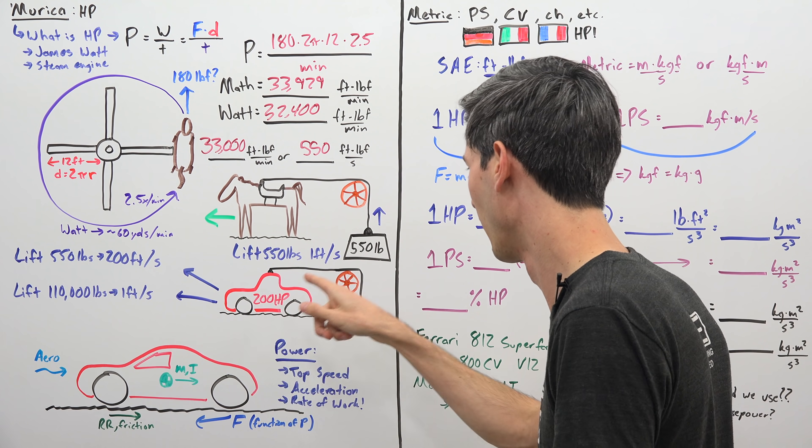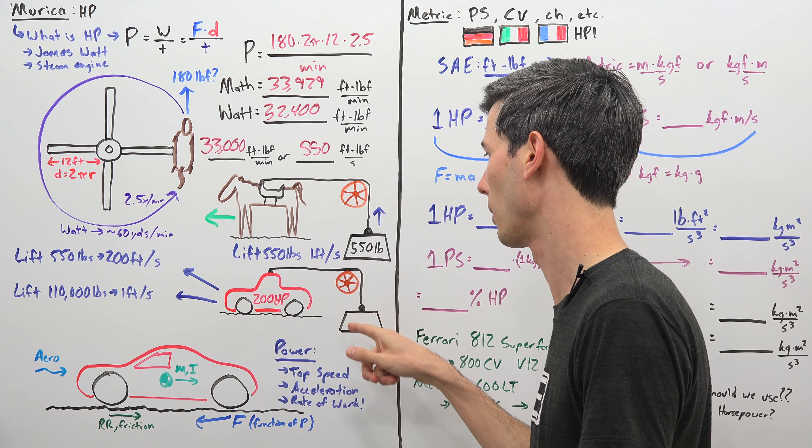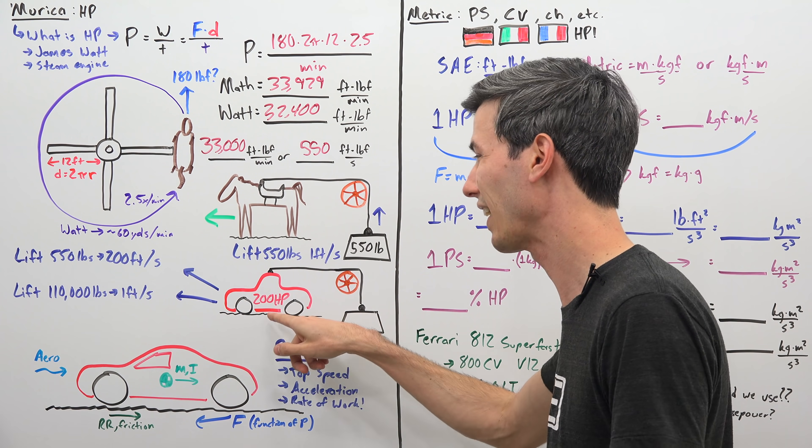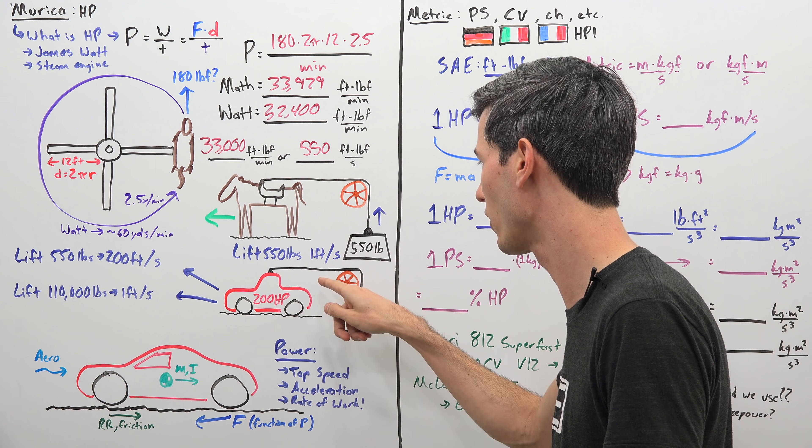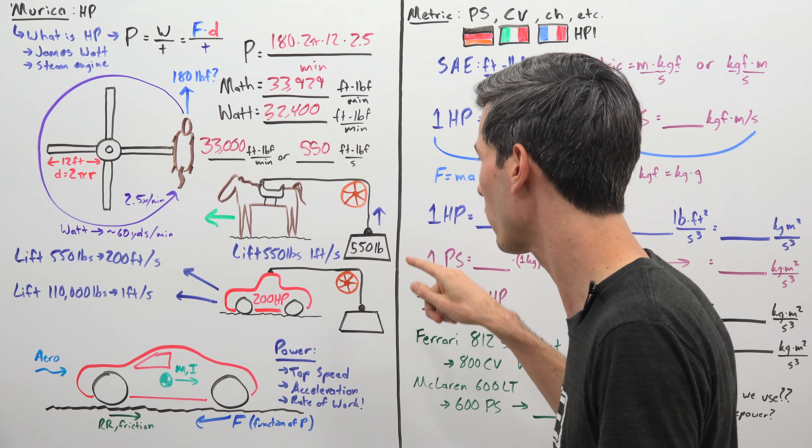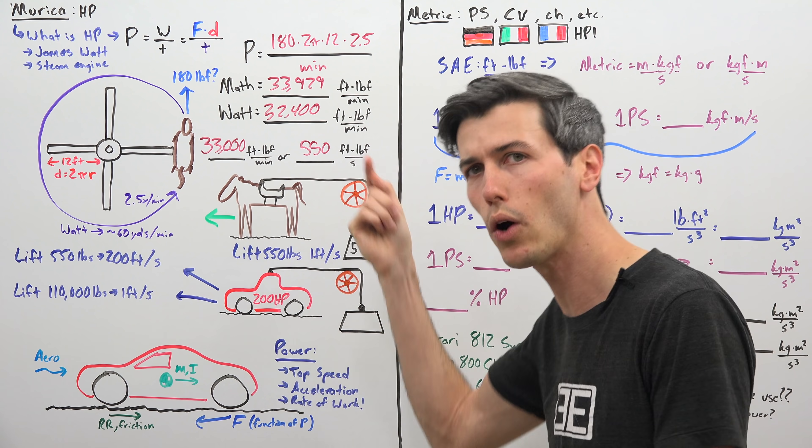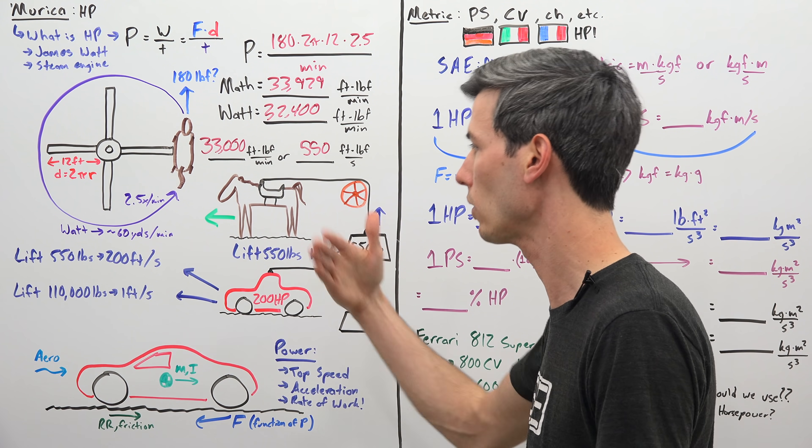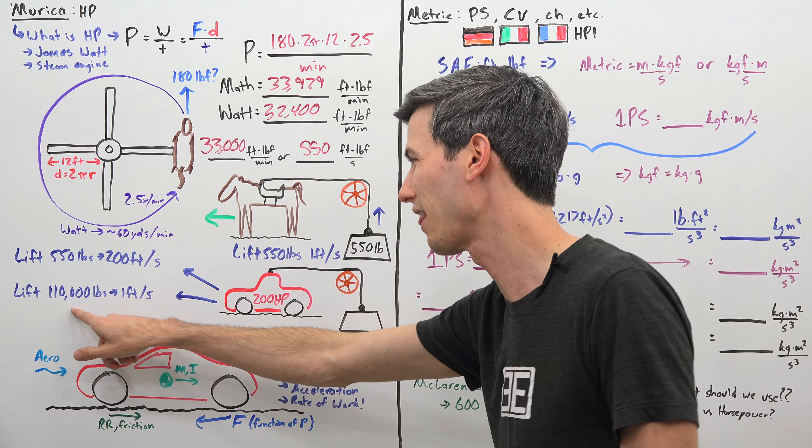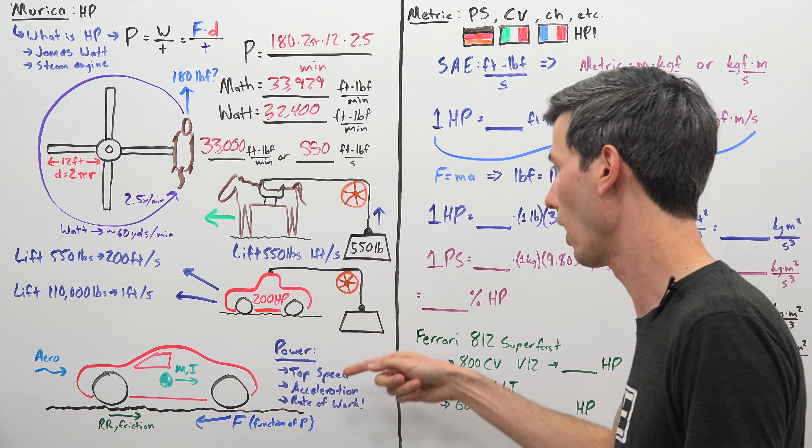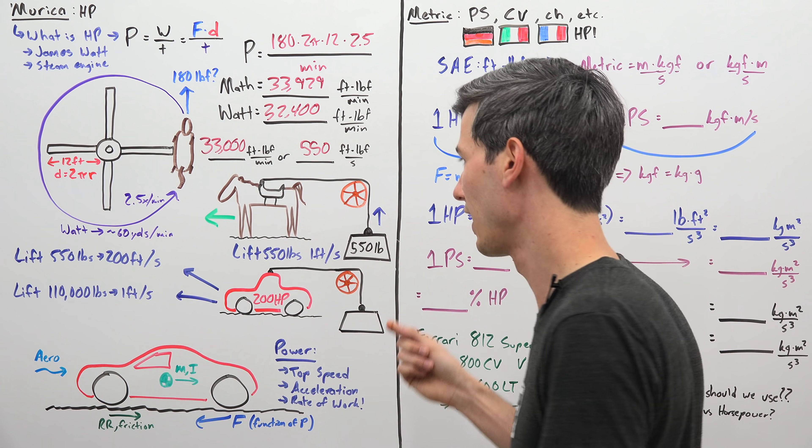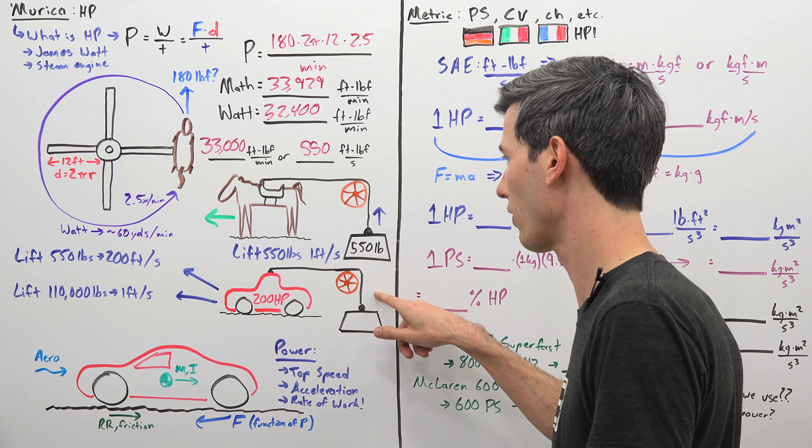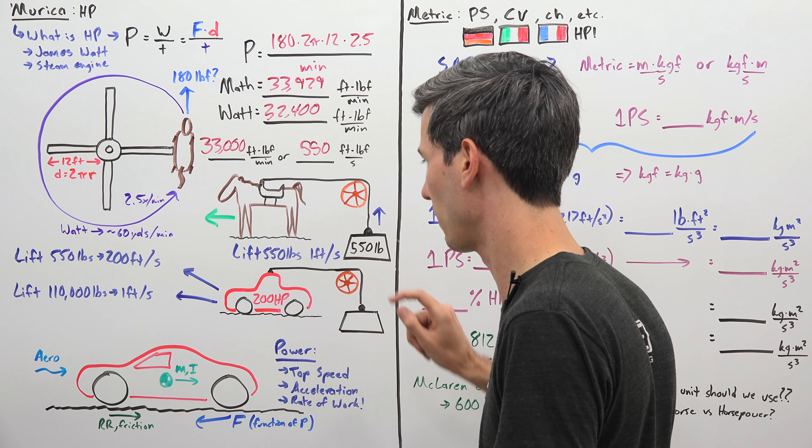So if you had a car engine that was then strapped to the same system, well it would be able to either take that 550 pounds of force. Say it has a 200 horsepower car engine that is doing the work here. Well it could lift that 550 pounds 200 feet in one second instead of just one foot or it could do a lot more weight. Multiply the weight by 200, 110,000 pounds lift that one foot in one second. So you can see that you know you multiply the horsepower by 200 you can do significantly more work in the same amount of time.